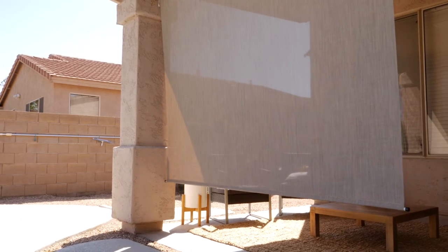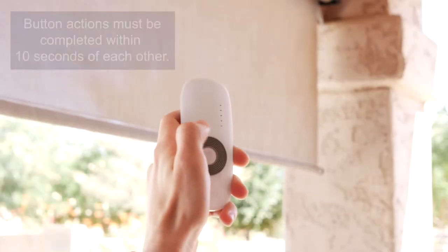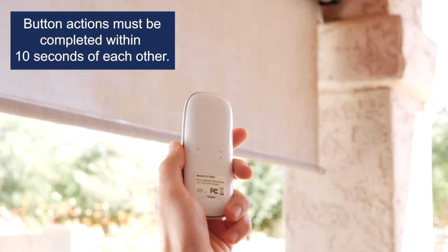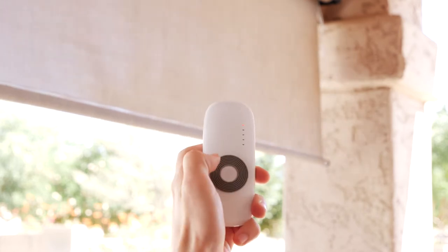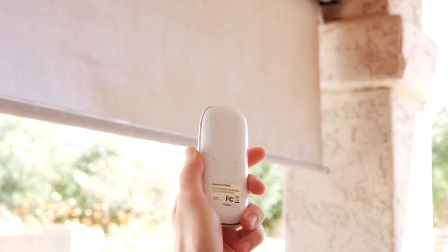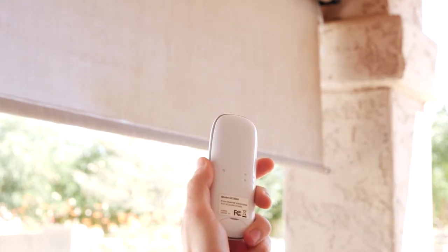Next, you're going to put the shade into limit setting mode. With the remote still on channel 1, press the programming button. The fabric will jog and the motor will beep. Press the up button. The fabric will jog and the motor will beep. Press the programming button again. The fabric will jog and the motor will beep another 4 times.